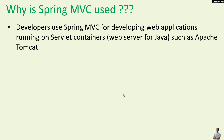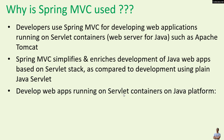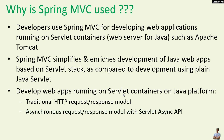Spring MVC is a part of the Spring Framework core, which is a project under the Spring platform's umbrella. Developers use Spring MVC for developing web applications running on servlet containers — a type of web server for Java such as Apache Tomcat. Spring MVC simplifies and enriches development of Java web applications based on the servlet stack, as compared to development using plain Java servlets.